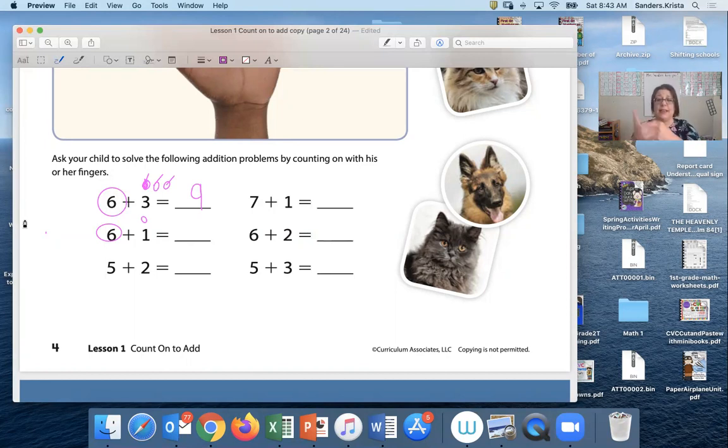Ready? We're gonna put 6 in our hands and then 1 on our fingers. Here we go. 6, 7. So what is one more than 6? 7.